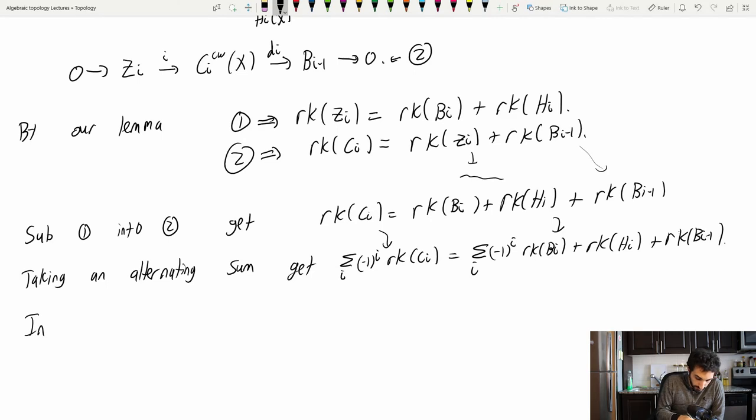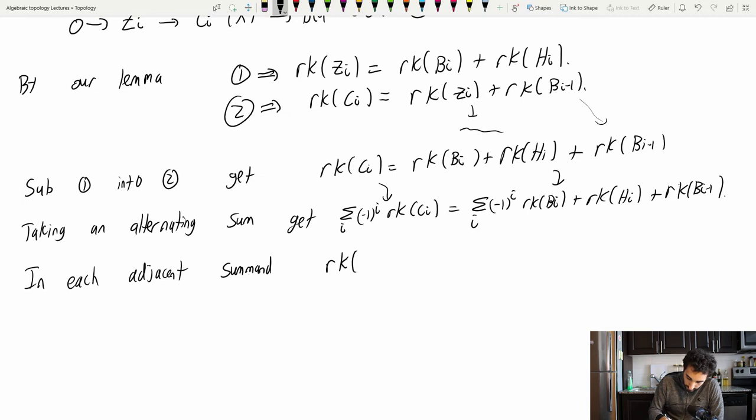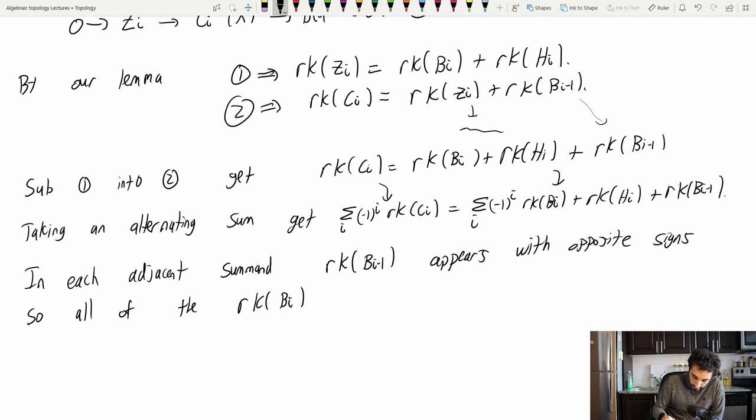Think of each adjacent sum. So now in each adjacent sum, or like subsequent sum, I'll call it adjacent. I hope you know what I mean. Like in the i term and the i plus one term. Each adjacent summand, rank of Bi minus one appears with opposite signs.